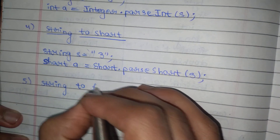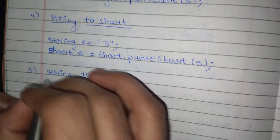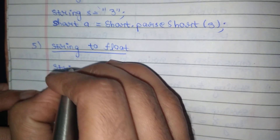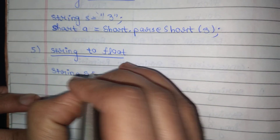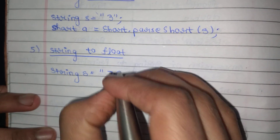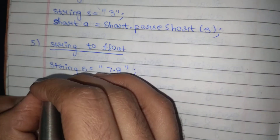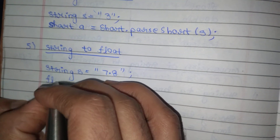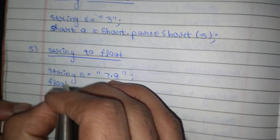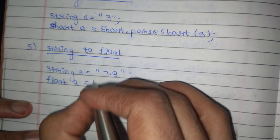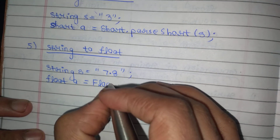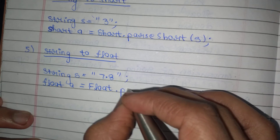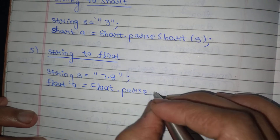Fifth: string to float. I am taking a variable string s equal to 7.8. To convert it into a float, I will write float a is equal to Float — F with capital, as it is the wrapper class — dot parseFloat, and then s.